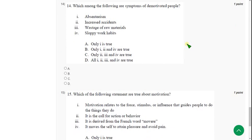So fourteenth question now. Which among the following are symptoms of demotivated people? So for fourteenth question, the answer is the first option, absenteeism, increased accidents, sloppy work habits, and also wastage of raw materials. So ultimately the answer will be option D again. All four are correct. That means option D is correct answer.